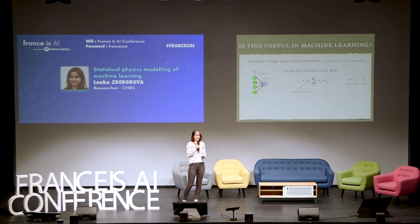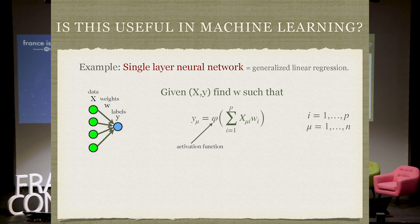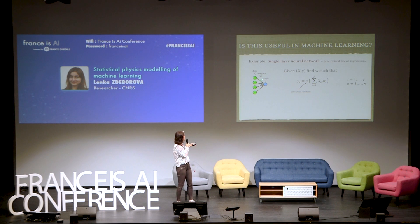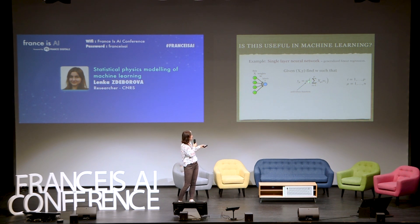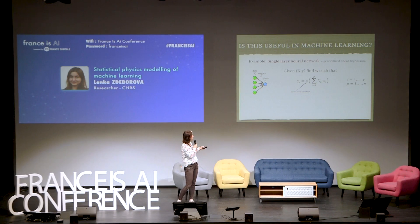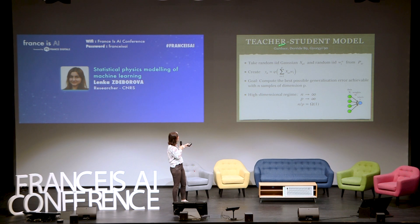So is that useful in machine learning? Let me illustrate how it could be useful, on the example of what we could call a single-layer neural network, or in statistics a generalized linear regression, where I have a dataset x. Here p is the dimension of each data point, and n is the number of samples. Then I have some set of weights that I want to find, so that the labels I observe are fitted by some activation function phi applied to the data through these weights. If you think of linear regression, logistic regression, phase retrieval, or the perceptron, all those are basically special cases of this single-layer network.